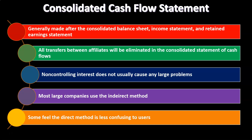Some feel the direct method is less confusing to users. When thinking about the regulations between the two methods — indirect and direct — it's the same kind of issue as with a single organization: should you use the direct method or the indirect method for operating activities? Sometimes people on the regulation side actually like the indirect method because it has a reconciliation between net income and cash flows from operating activities, essentially reconciling the two. The direct method doesn't really have that, although many feel the direct method makes more sense and is easier for readers to read.